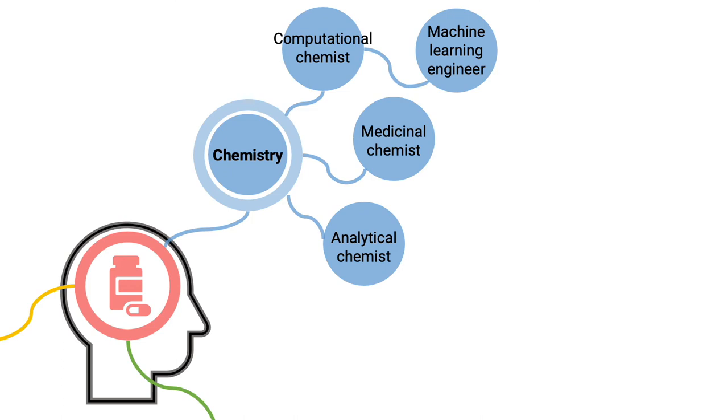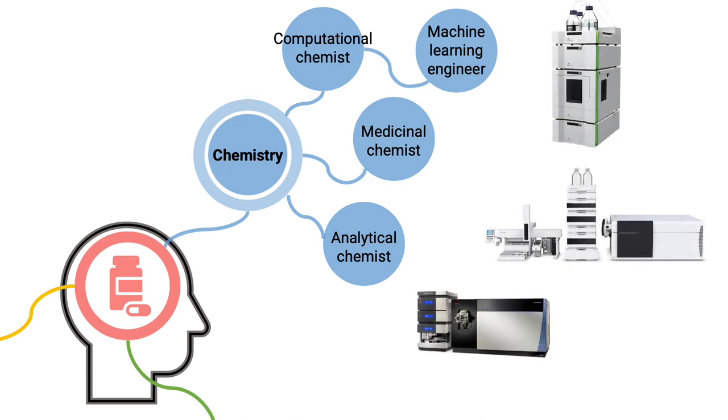Analytical chemists have many different tools under the tool belt such as NMR, liquid chromatography, mass spectrometry, supercritical fluid chromatography, HPLC, etc. If you really enjoyed your analytical chemistry class and using and developing analytical instruments, this is a job for you.